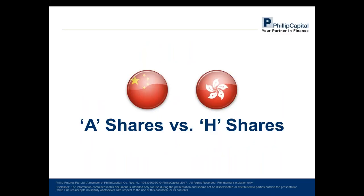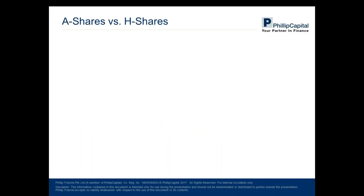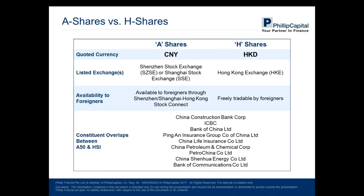Now I want to talk about the difference between A and H shares. A shares are quoted in CNY while H shares are quoted in HKD. A shares are listed on Chinese exchanges while H shares are listed on the Hong Kong exchange. Both are now largely available to foreigners. The constituent overlaps between the A50 and the Hang Seng Index share the same set of companies — for the A50 these are the A-listed shares, while on the Hang Seng they are the H-listed shares. There are differences in prices even when converted to the same currency.